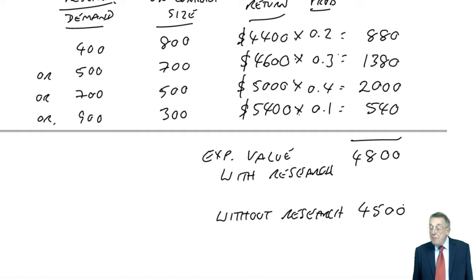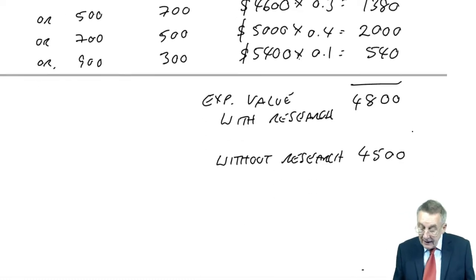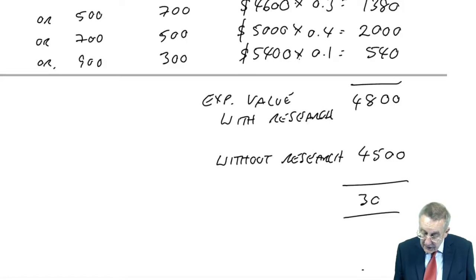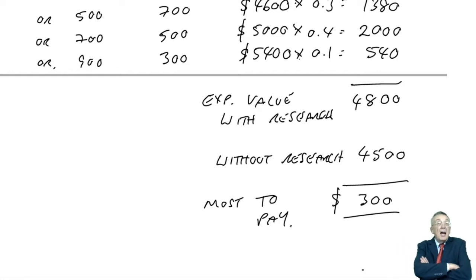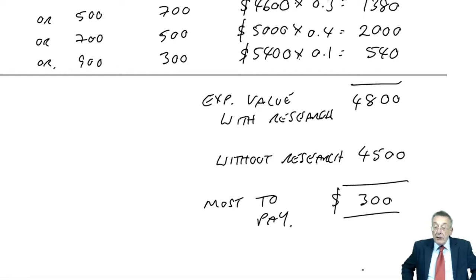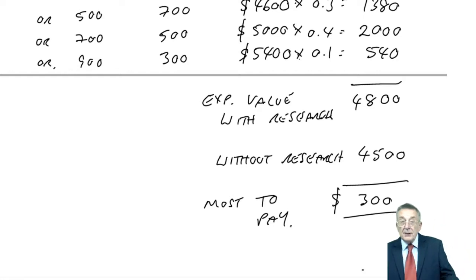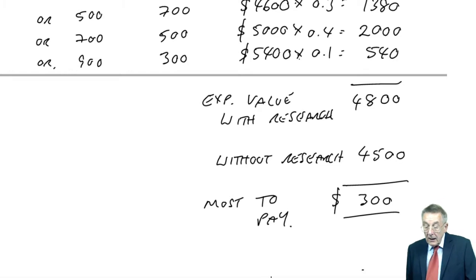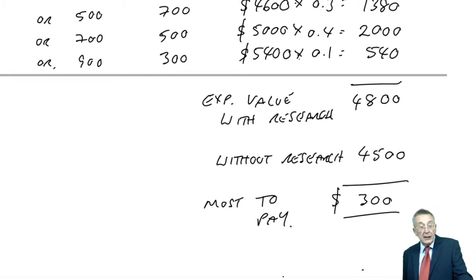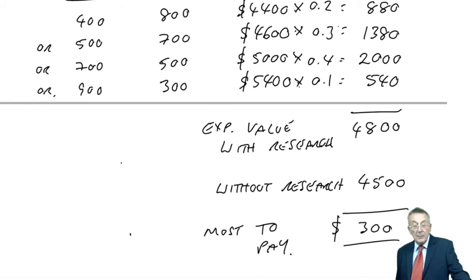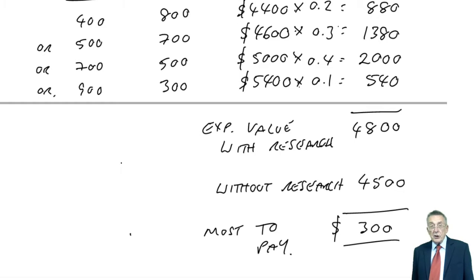Therefore, what's the most I'm prepared to pay for the research? I'm prepared to pay up to the difference — 300. Buying the research means we can make better decisions and gives a higher expected return. The amount you're prepared to pay for that research is limited to the extra return we can make. Arithmetically that's not hard — we've already done all the work. But it's surprising how many people do the rest perfectly and then go wrong here.